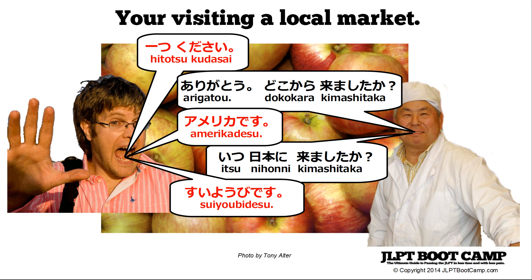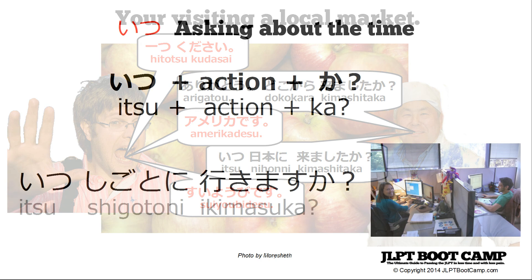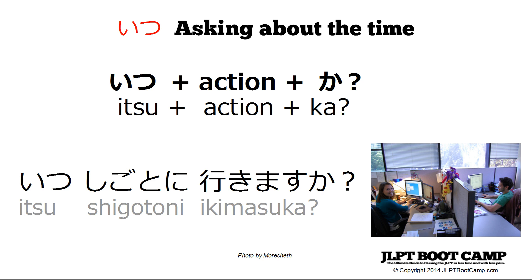These are very common questions. Usually when you meet someone in Japan, they'll almost always ask what country you're from, and they'll sometimes ask when you came to Japan as a general conversation topic. Ojisan is using Itsu, which is the general question word for 'when.' The structure is: Itsu + action + ka. The action can be in present or past tense, depending on what you want to ask about — whether it's a past event, an everyday thing, or something in the future.